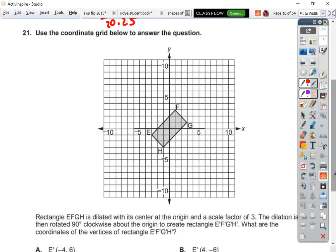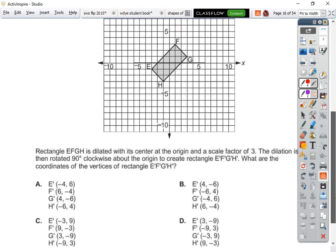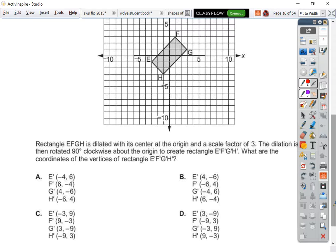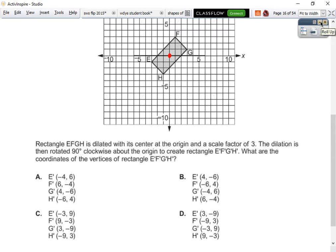Alright, 21. We have another triangle and another transformation. It's dilated this time. Now remember dilation means it's going to get bigger with its center at the origin, and the origin is right here. So it's getting dilated by a scale factor of 3. And then the dilation is rotated 90 degrees clockwise about the origin to create rectangle E prime, F prime, G prime, H prime. What are the coordinates of the vertices of that?